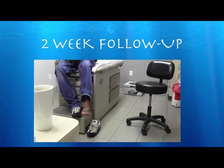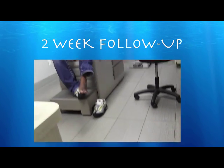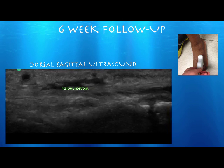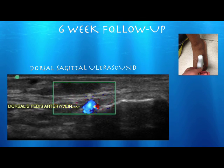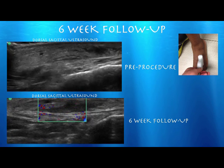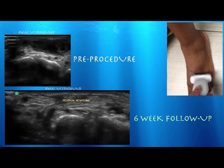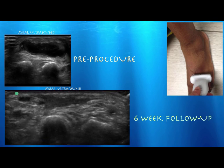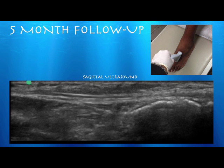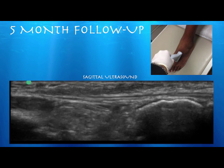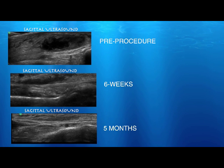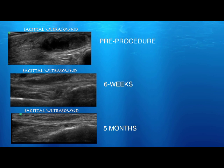At two weeks post-procedure the patient reports feeling a lot better — hurting less when walking and able to move his toes more than before. At six weeks, you can see the hematoma is starting to get a little lighter, consistent with some solid tissue forming, but it is certainly smaller. You can also see vascular structures right underneath it. Comparing six weeks to pre-procedure, it is much smaller and organizing. At five months out, it has shrunk even more, still with some hyperechoic signal but much improved. The serial images of pre-procedure, six weeks, and five months show the hematoma has drastically reduced in size.